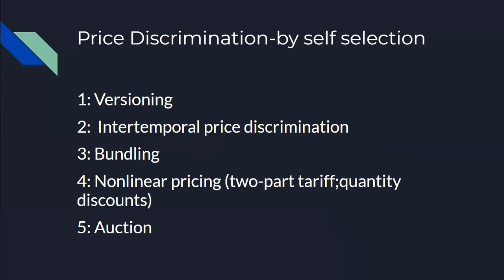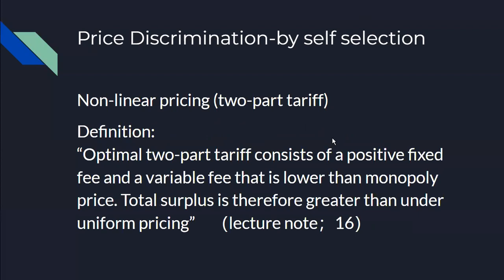Price discrimination by self-selection has four types: first is versioning; second is intertemporal price discrimination; third is bundling; and fourth is non-linear pricing. Non-linear pricing has two subtypes: the two-part tariff and quantity discounts.